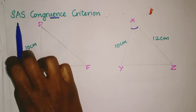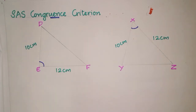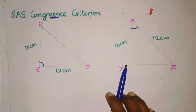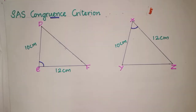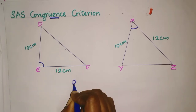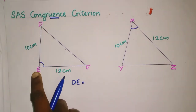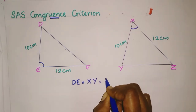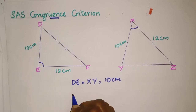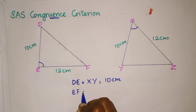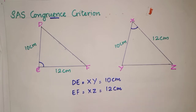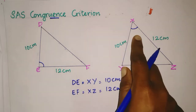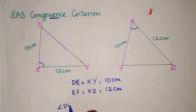The angle is coming in between two sides, so it is called the included angle. Here we have two triangles: triangle DEF and triangle XYZ. DE is equal to XY equal to 10 centimetres. EF is equal to XZ equal to 12 centimetres. It is given that these two angles are equal, so angle DEF equals angle YXZ.